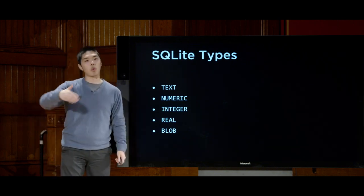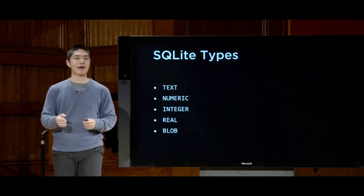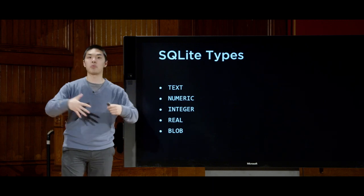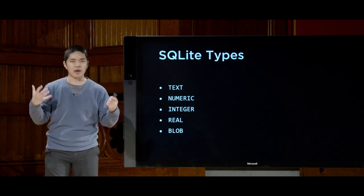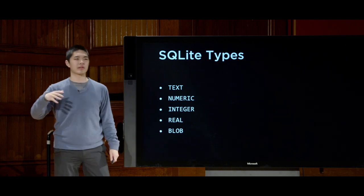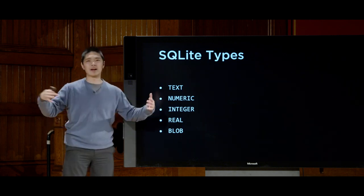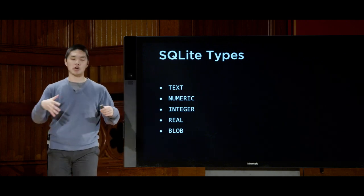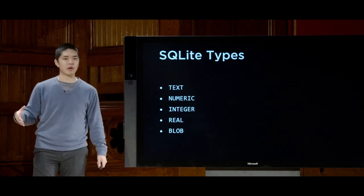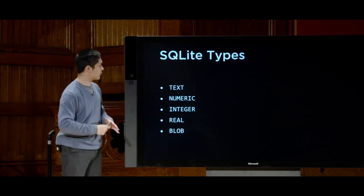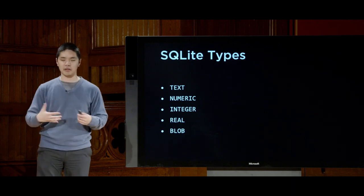SQLite supports integers — whole numbers including negatives. It supports real numbers, which can have something after the decimal point, like 2.8. Numeric is a broader category for number-like data such as Boolean values or dates. And blob, which stands for binary large object, is for any other binary data — zeros and ones — that you might want to store, such as audio files, images, or other file types inside your database.